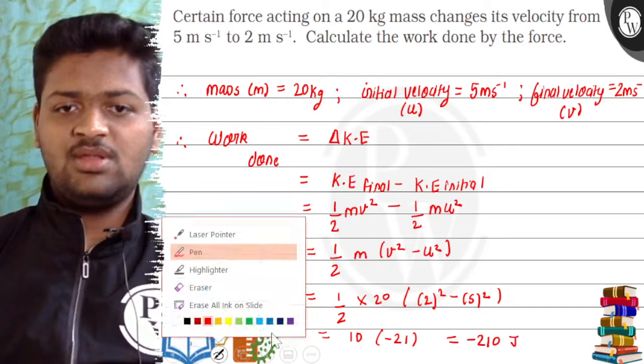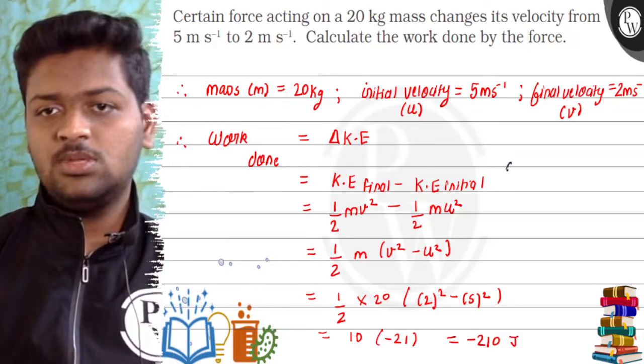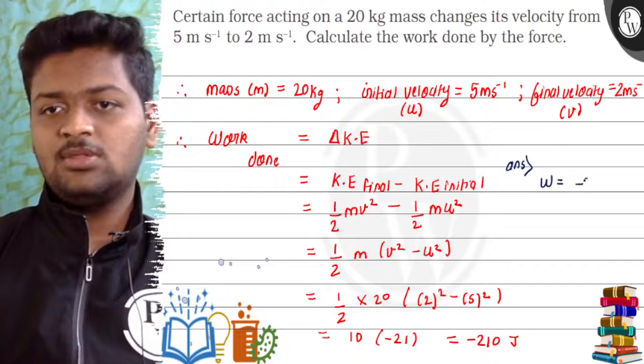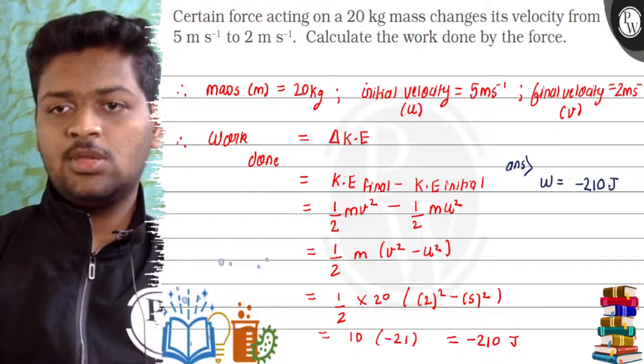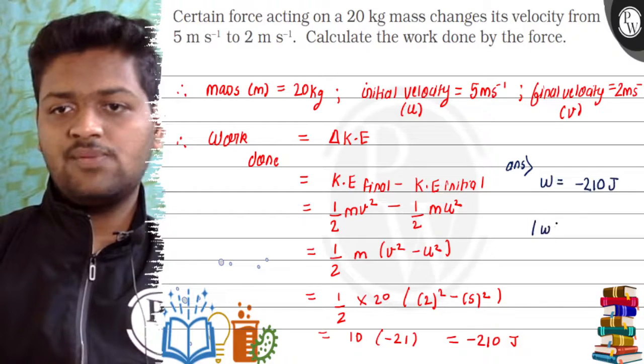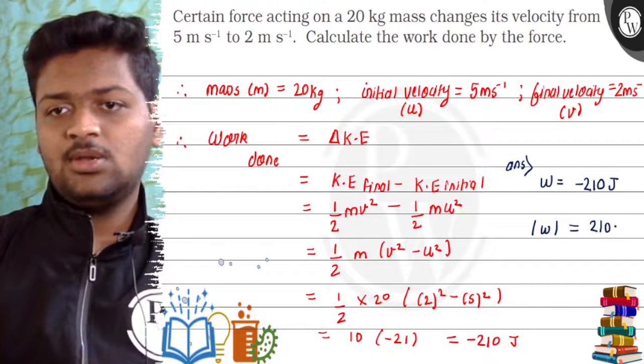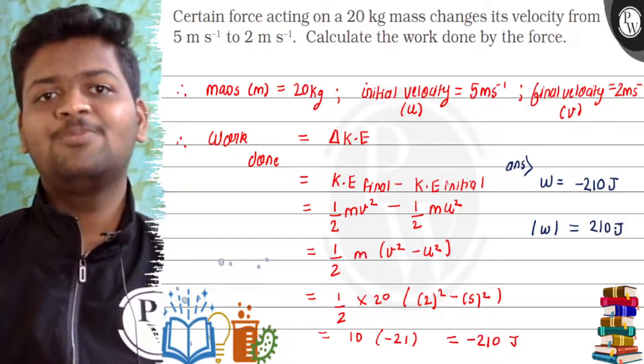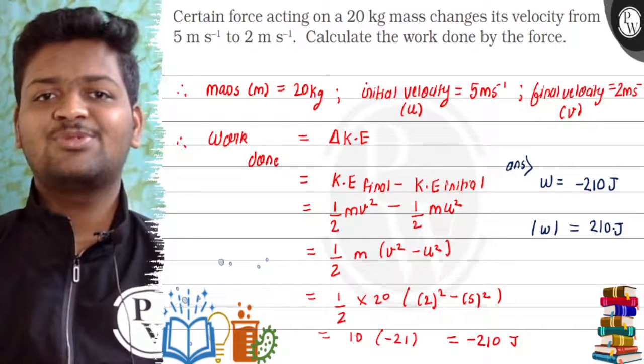So our final answer to this question will be: Work done is minus 210 joules, and magnitude of work done is 210 joules. This is our final answer. I hope you understood the question. Thank you so much.